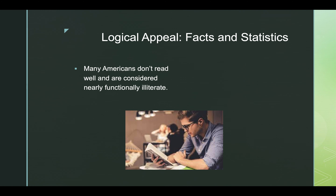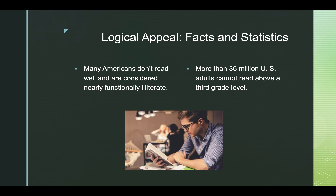A fact is that many Americans don't read well and are considered nearly functionally illiterate — meaning they can read a little bit, but not enough to fill out an important form they need for the DMV. Now here comes the statistic for that: more than 36 million U.S. adults cannot read above a third grade level. There's something about specificity that makes people feel like that's expert information instead of a generalization such as 'many Americans don't read well.' Now we have some specifics here.